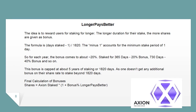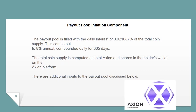Final calculation of bonuses: Shares = Axion staked × (1 + bonus percent from Longer Pays Better). Payout pool — inflation component: The payout pool is filled with the daily interest of 0.021087% of the total coin supply. This comes out to 8% annual, compounded daily for 365 days. The total coin supply is computed as total Axion and shares in the holder's wallet on the Axion platform. There are additional inputs to the payout pool discussed below.